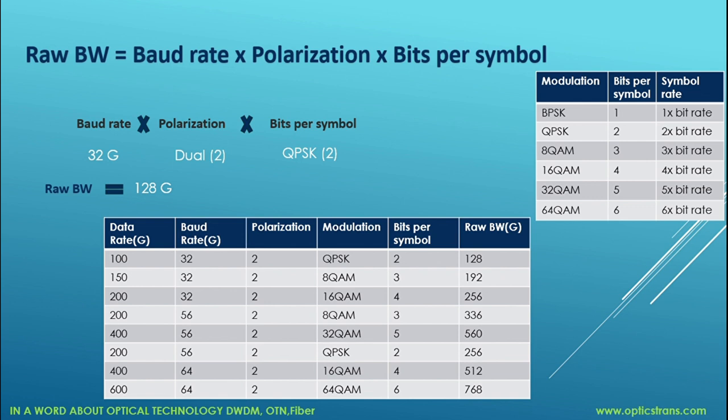Here's a list of some data rates with modulation. For example, 200G data rate using 56 gigabaud with dual polarization of 8-QAM has 3 bits per symbol, and the raw bandwidth will be 336.